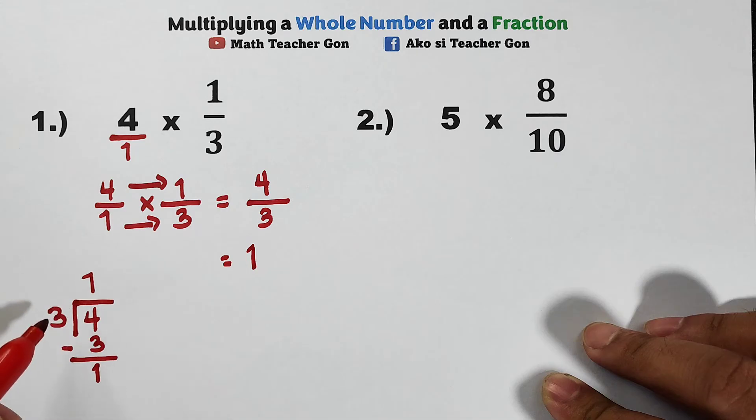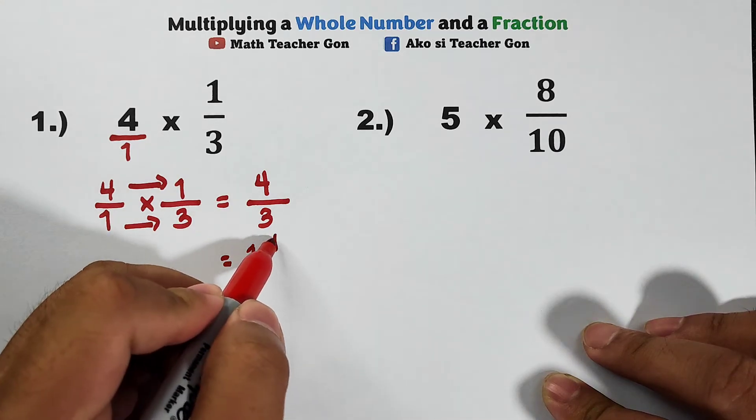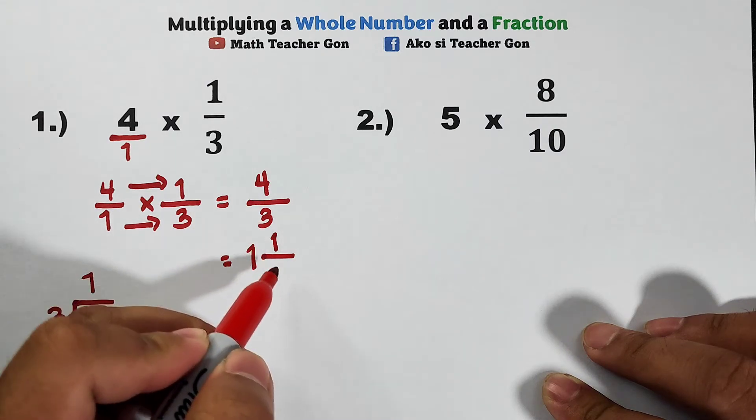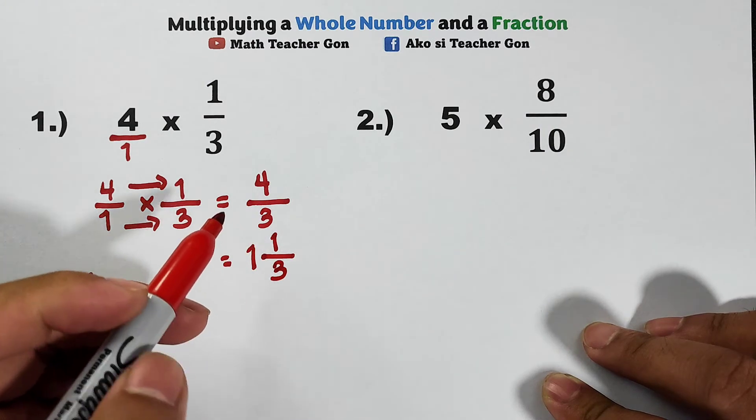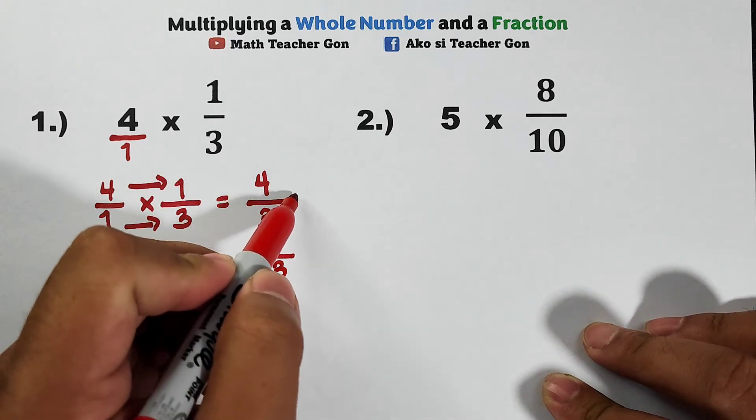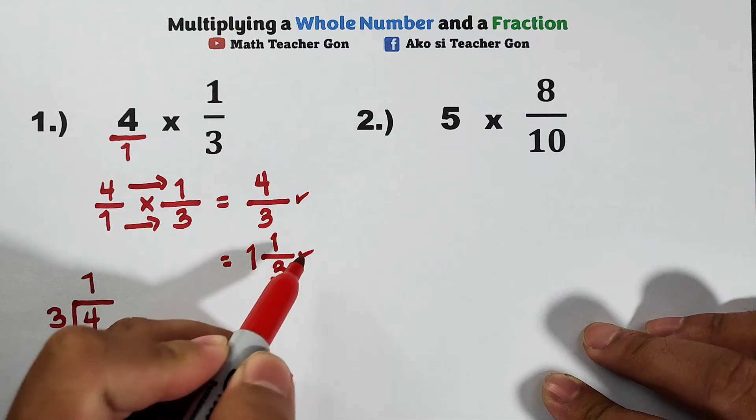And for the fraction, this remainder will serve as the numerator over your original denominator which is 3. Meaning either of the two can be considered as the answer, so we have 4/3 or 1 and 1/3.